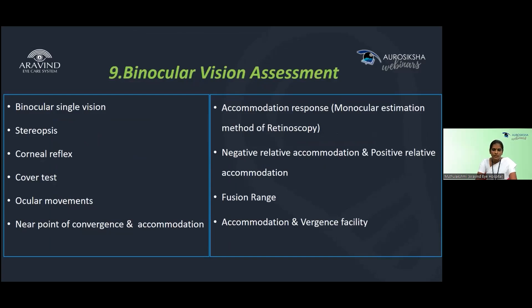Step 9 is binocular vision assessment. This is needed when the patient reports headache, eye pain, eye strain, reading difficulty, sleepiness after reading, or blur vision. Parameters checked include binocular single vision, stereopsis, corneal reflex, cover test, ocular movements, near point of convergence, near point of accommodation, MEM retinoscopy (Monocular Estimation Method), negative and positive relative accommodation, fusion range, accommodation facility, and vergence facility.